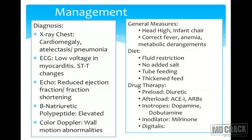General management measures include giving a head-high position or infant chair to reduce work of breathing. Underlying metabolic or infective derangements should be addressed. Diet needs to be modified by thickening feeds to reduce fluid intake while supplying as many calories as possible without overloading the system. As infants are predominantly breastfed, restricting feeding will impair growth, so this is when diuretics are introduced. No added salt and tube feeding sometimes helps in reducing work of swallowing and breathing.